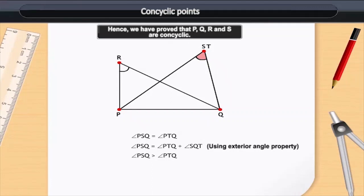Therefore, this means that S was actually located on the circle. Hence, we have proved that P, Q, R and S are concyclic.